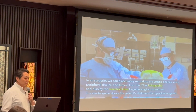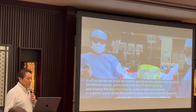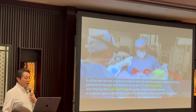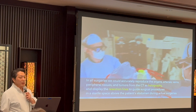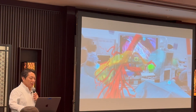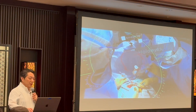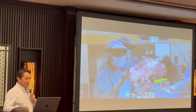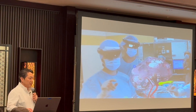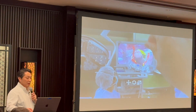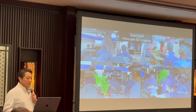In our surgeries, we could accurately reproduce the organs, arteries, veins, peripheral tissues, and tumors from CT angiography. We have already performed more than 100 surgeries using these kinds of goggles — including pancreatic surgery, coronary bypass, lung cancer embedded in the spine, renal cancer dissection, uterus myoma, uterine cancer, and various other cancers.